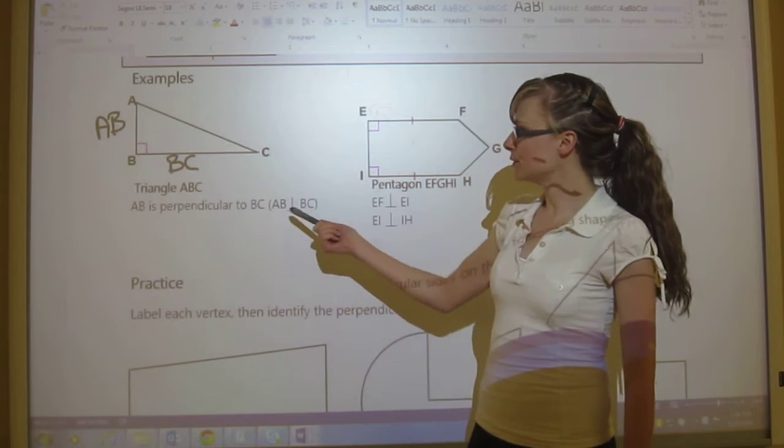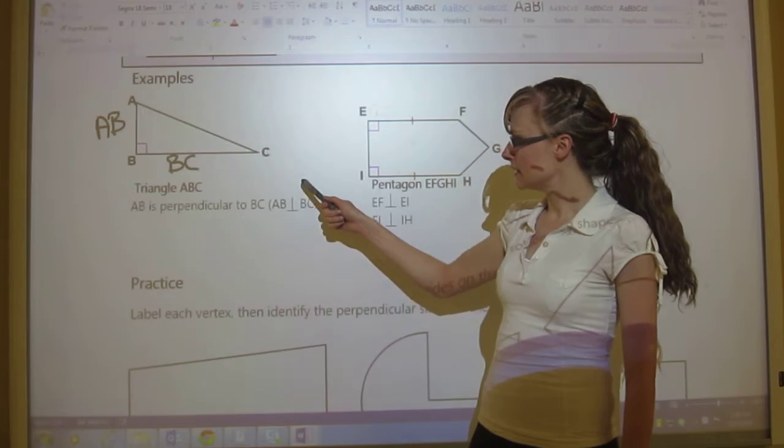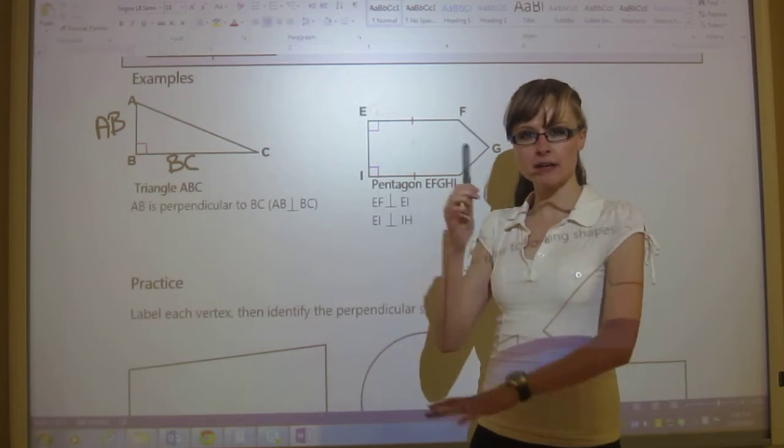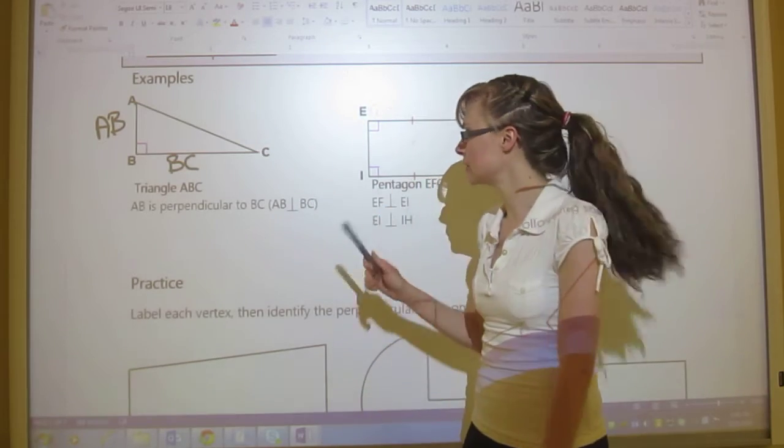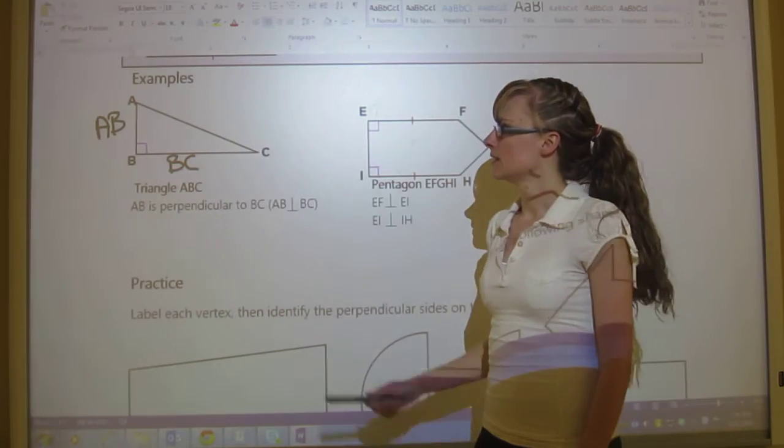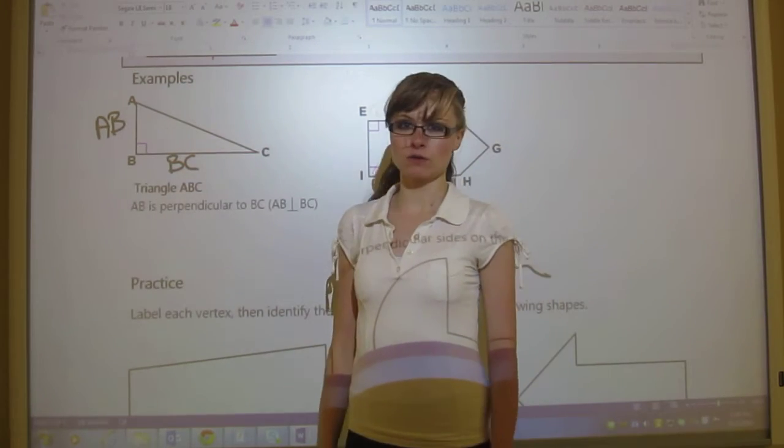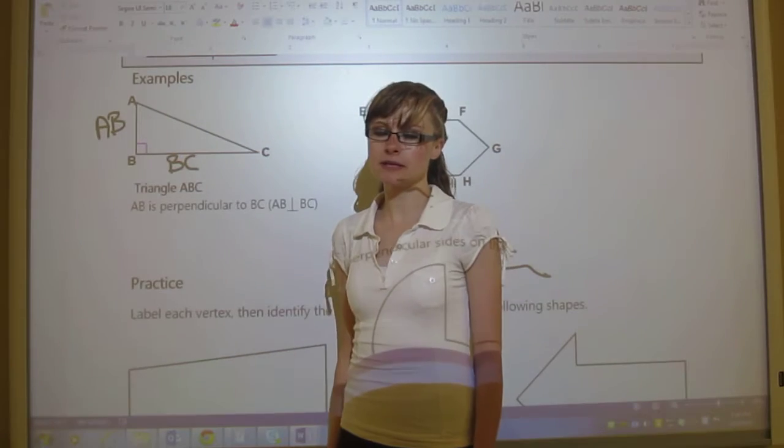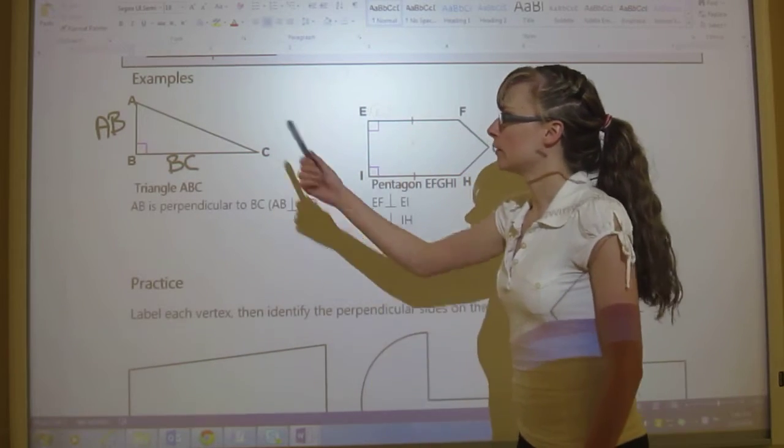But this is how you would write it. AB is perpendicular to, that upside down T means is perpendicular to, BC. So that's this shape. There are no other perpendicular parts to this shape of the triangle.